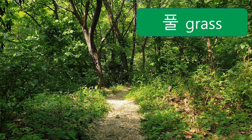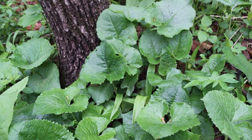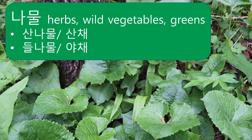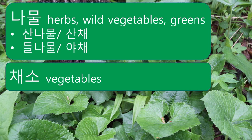Grass annoys farmers, but there are many grasses that people can eat. Edible grass roots and leaves are collectively called 나물 (namul). Namul can be translated as herbs, wild vegetables, or greens. Those found in mountains are called 산나물 or 산채, those in fields are called 들나물 or 야채, and grass grown by humans is called 채소 — though these days 채소 is commonly referred to as 야채.